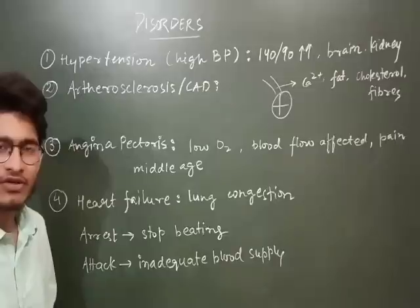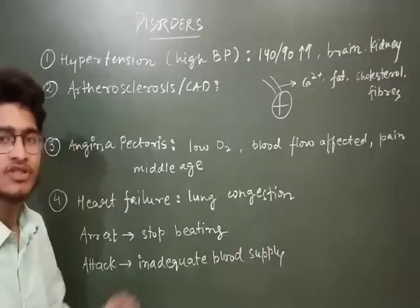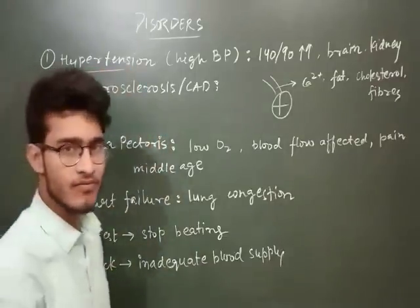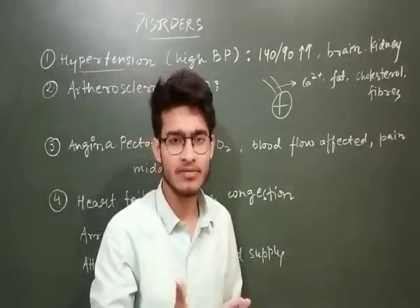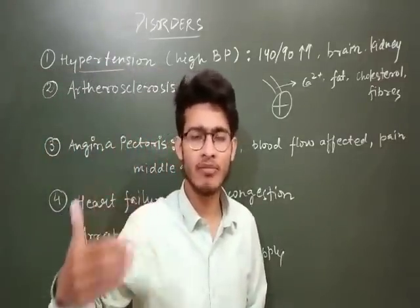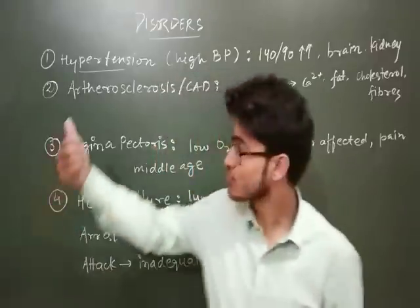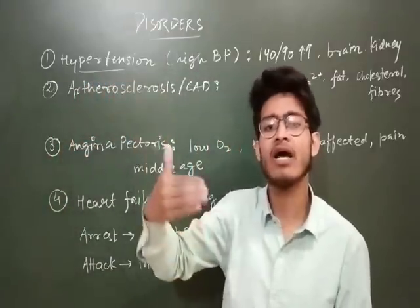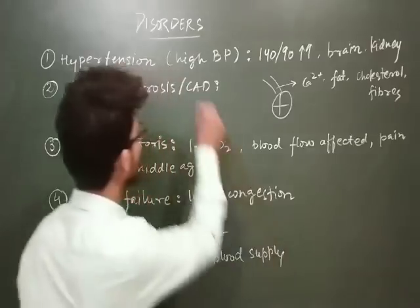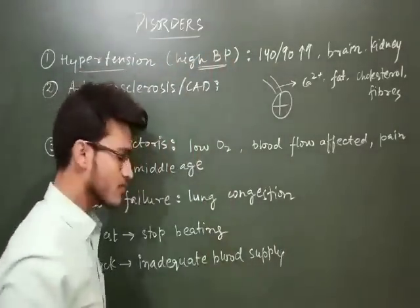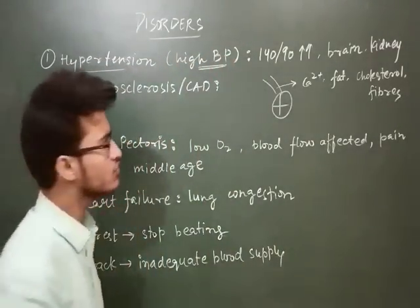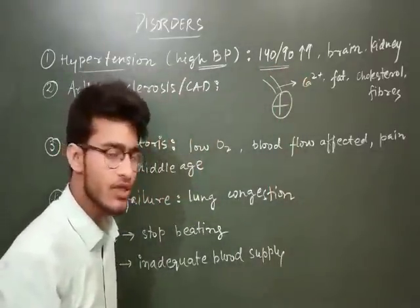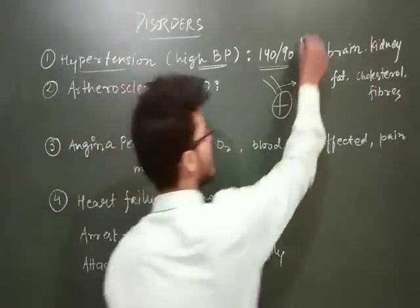The very first disease we are going to talk about, which is quite common in Indians, is Hypertension. Hypo means low and hyper means high. So here, Hypertension means very high BP or very high blood pressure. When the blood pressure goes above the range of 140/90 mmHg, that is the condition where Hypertension occurs.